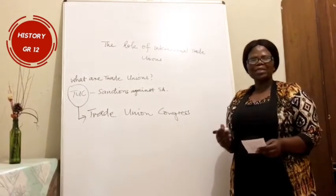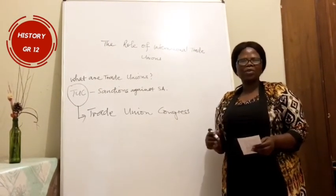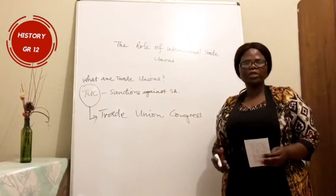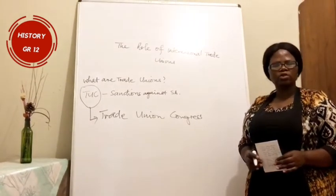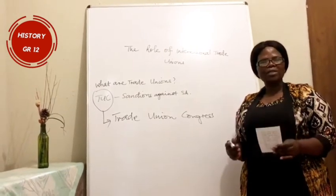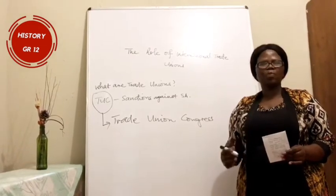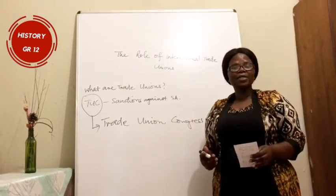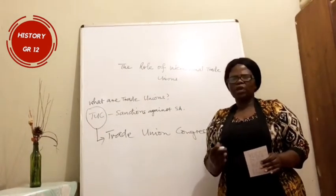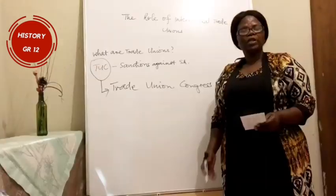This was the first step by TUC to be involved in anti-apartheid movement activities. TUC also supported the South African Allied Workers Union, and passed a resolution calling for all British trade unions to support the ANC.